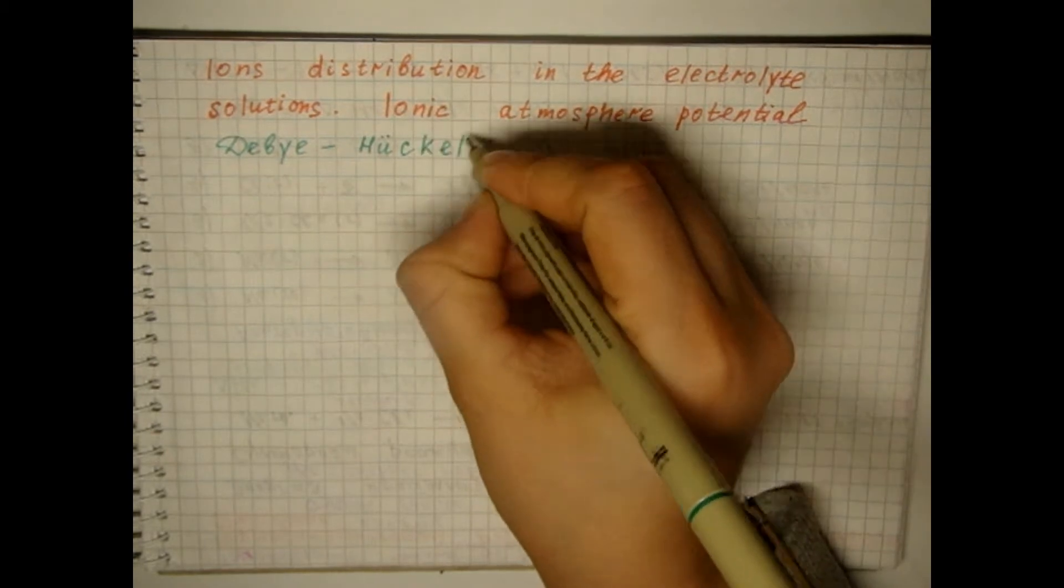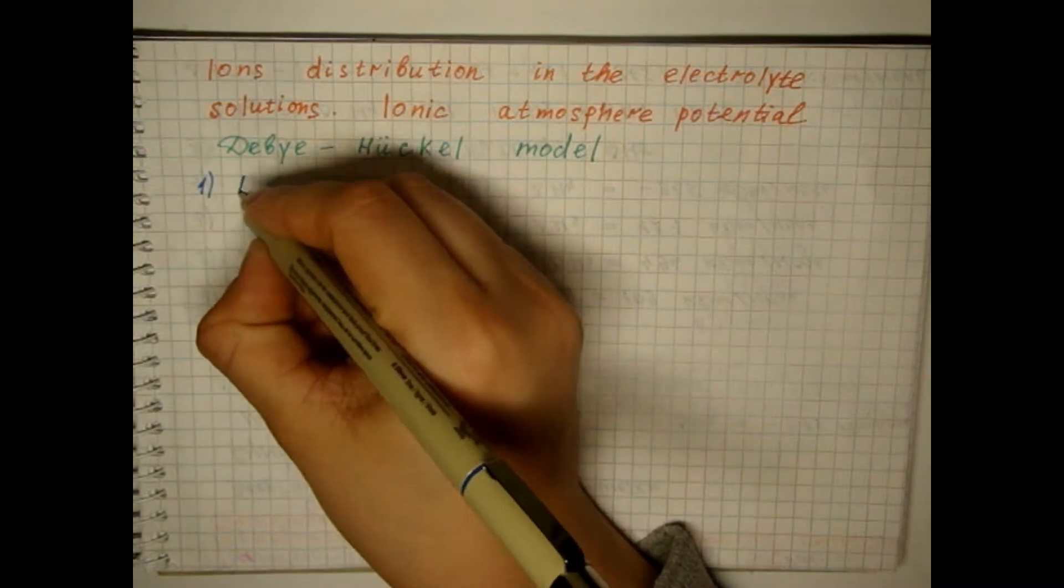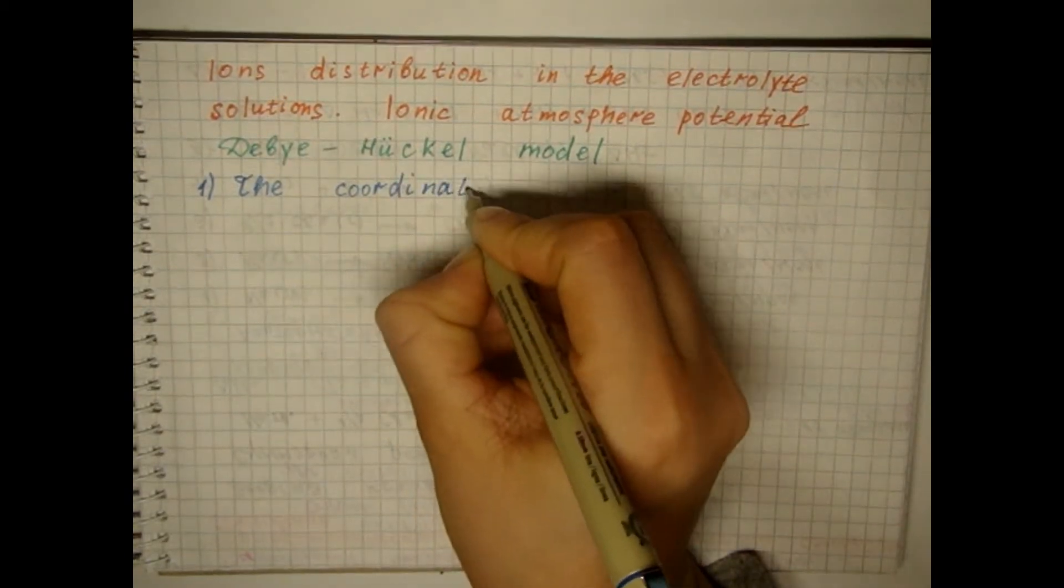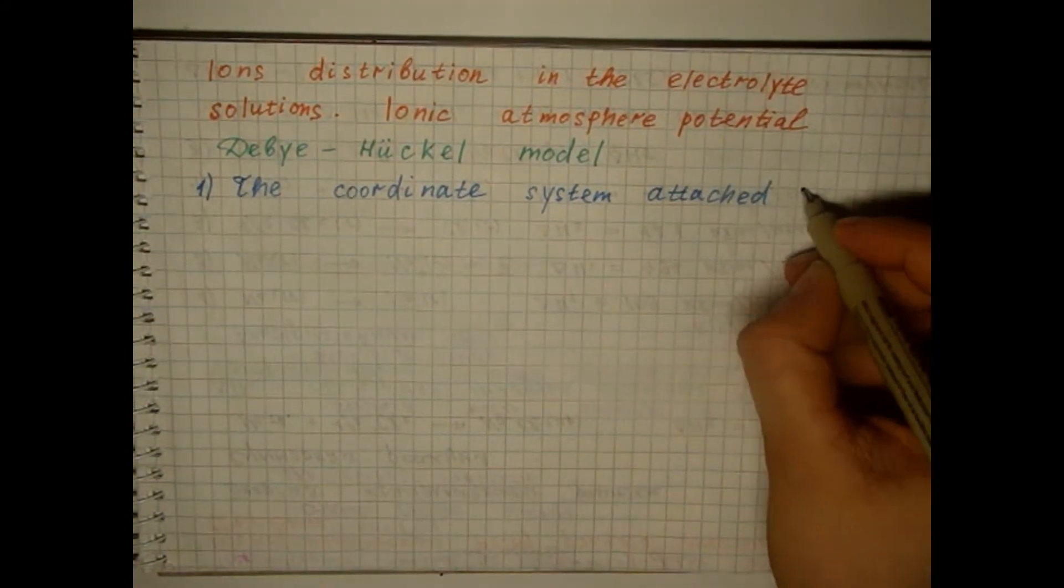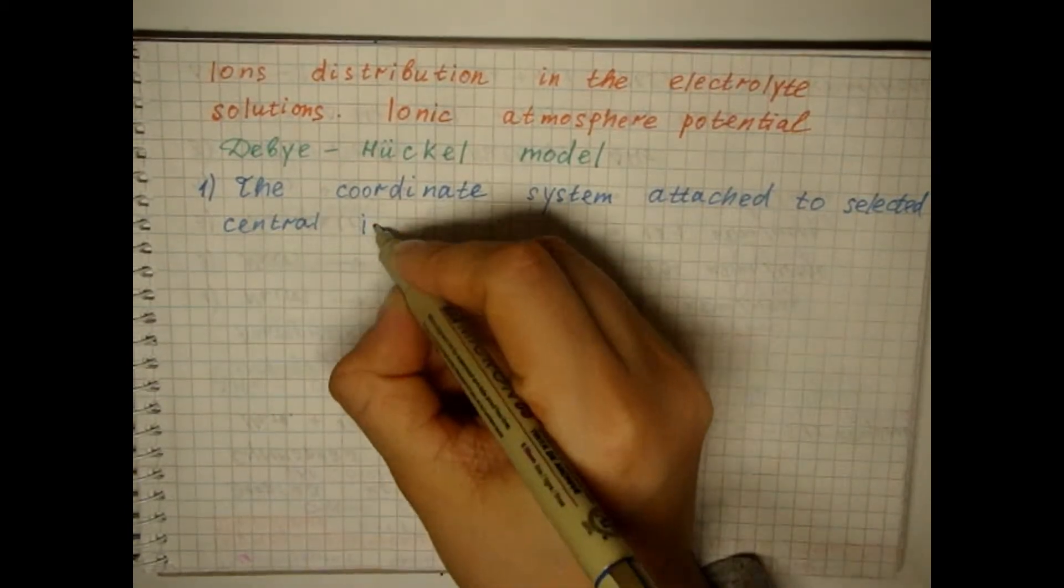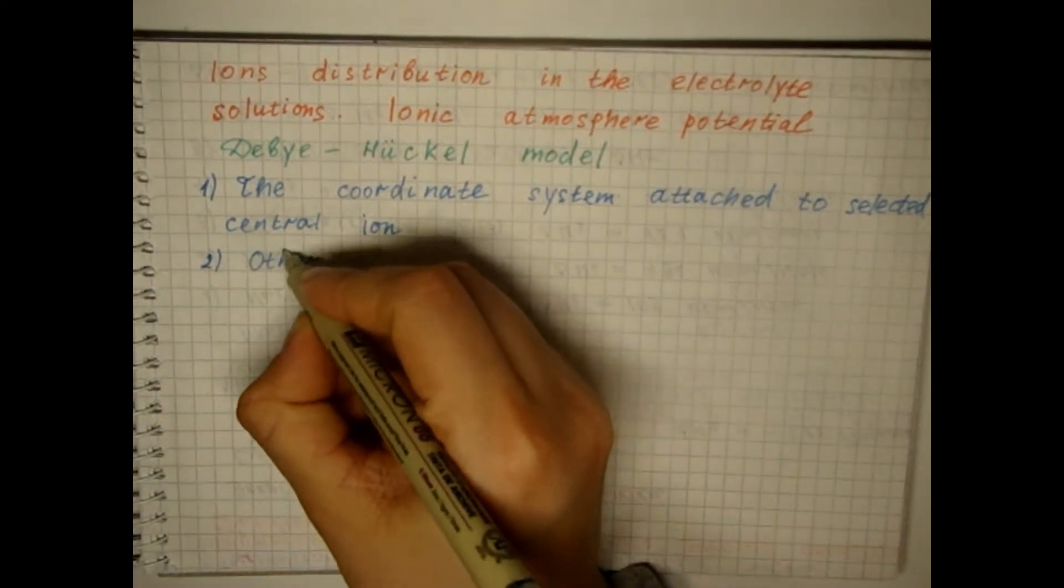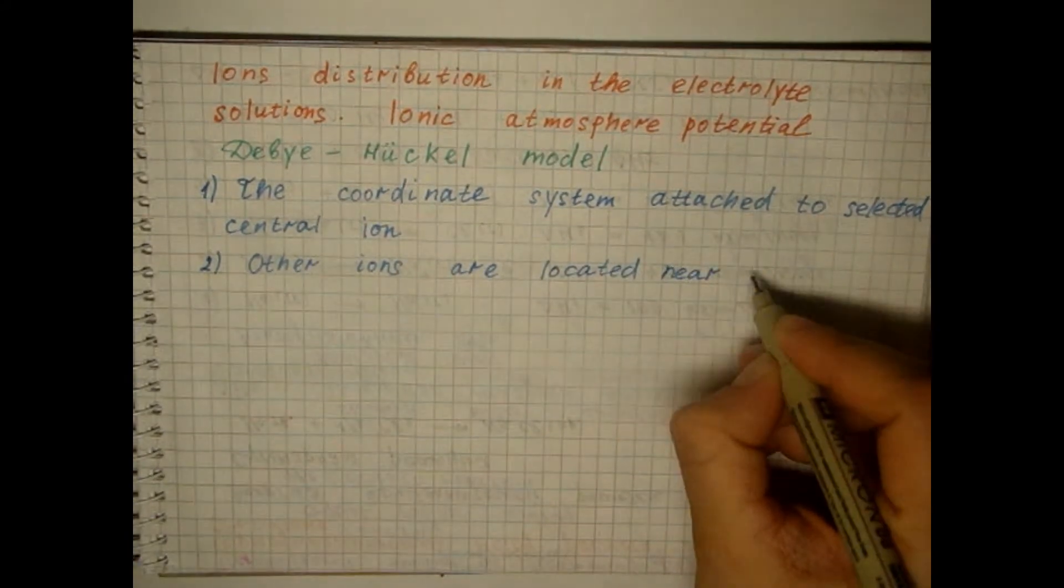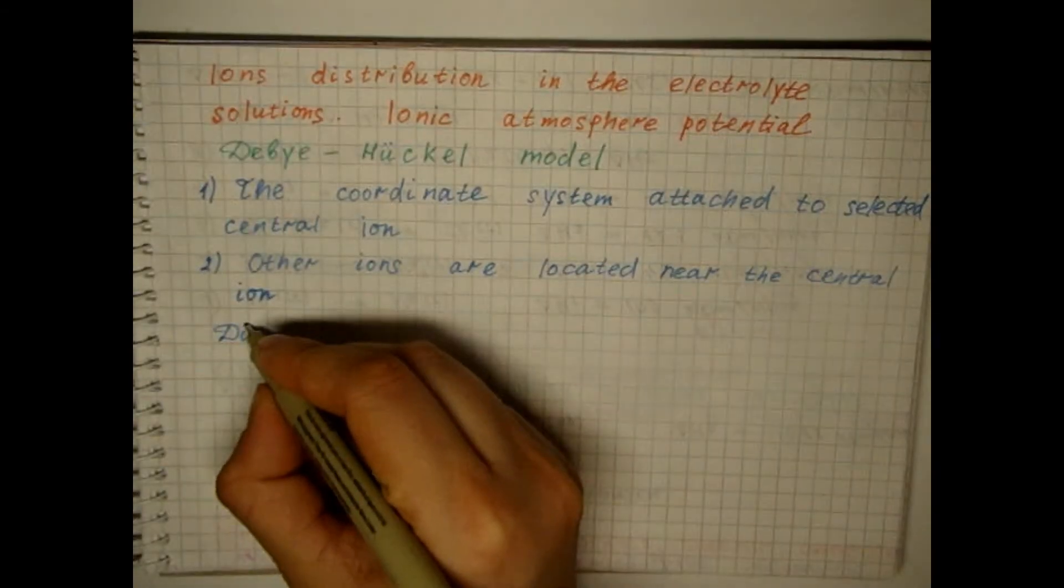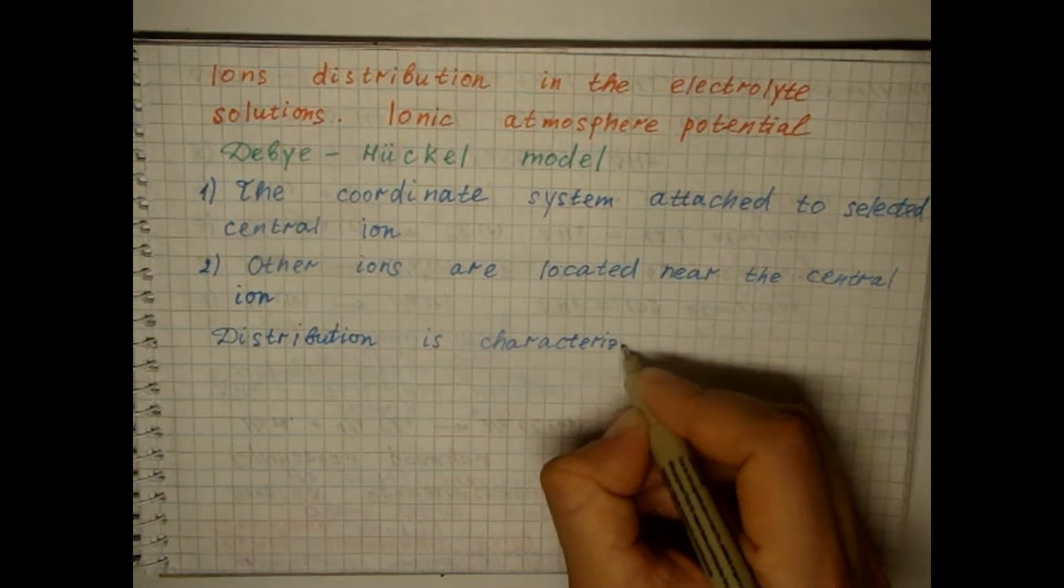In the Debye-Hückel model, the so-called central ion is selected, which is regarded as stationary, the coordinate system attached to the center of the ion. Other ions are located near the central ion. The nature of this distribution is due to the field of the central ion.